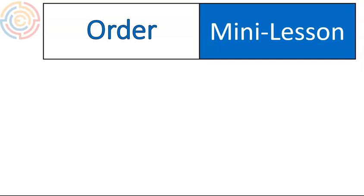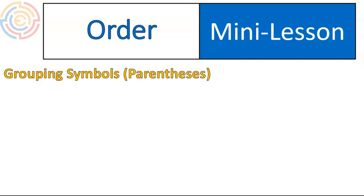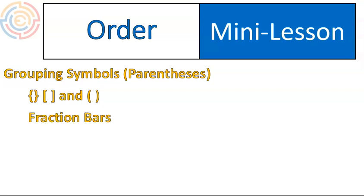The first step is that you take care of things within the grouping symbols. Grouping symbols can include braces, brackets, and parentheses. Often we call this step parentheses, but it includes much more than that — it's all grouping symbols. Also, fraction bars fall under this. If there's something on the top of a fraction and on the bottom of a fraction, you simplify all of that before you do the division.